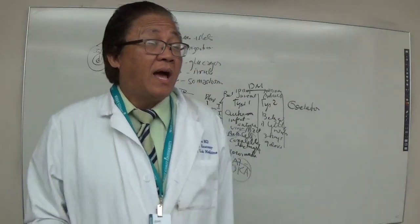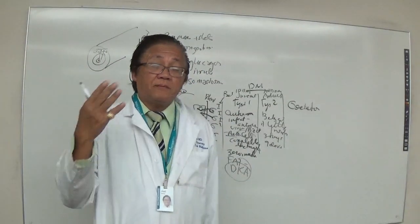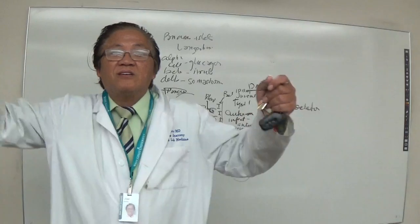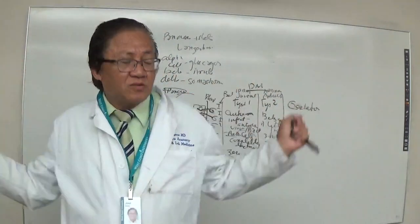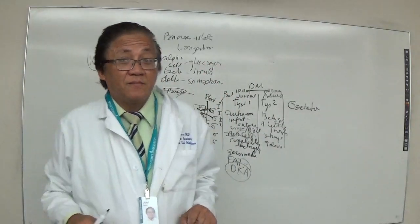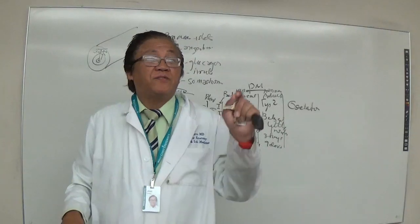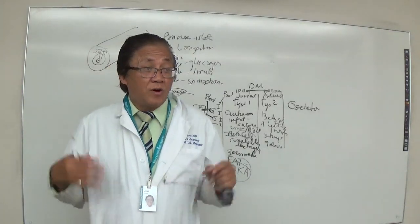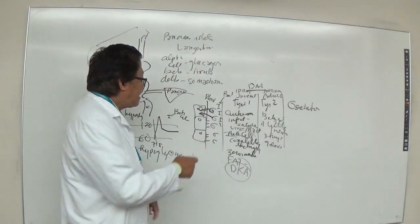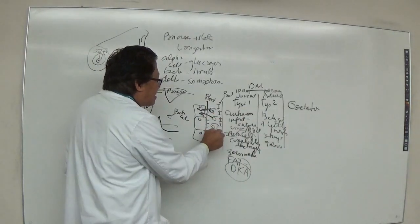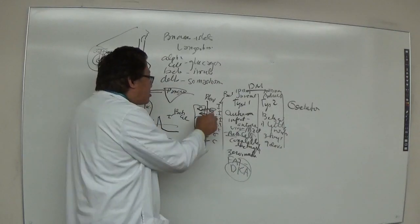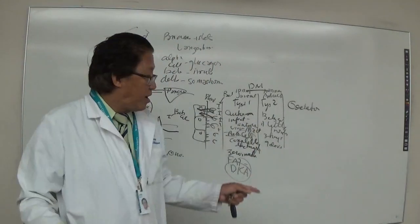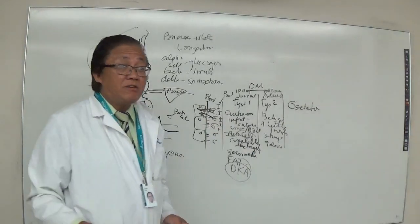It's like a movie theater with nine ticket sellers reduced to three — the line becomes long. Similarly, if you have nine doors but only three insulin keys, it takes time to open each door. The glucose line becomes long, and you still end up with hyperglycemia.